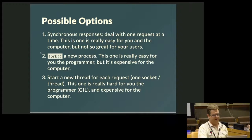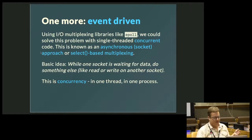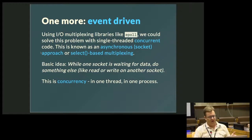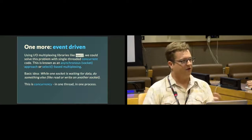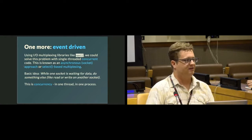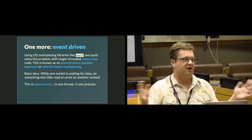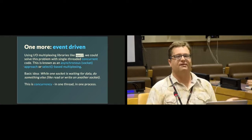So these are three not-so-great options. The fourth option is an event-driven approach. We could use an IO multiplexing library like ePoll that solves the problem with single-threaded concurrent code. This is known as an asynchronous socket approach or select-based multiplexing. The basic idea is: while one socket is waiting for data, do something else — like read or write on another socket. This is done by the kernel either sending signals or telling us when there's data available on one of the sockets, so we can poll all available sockets.